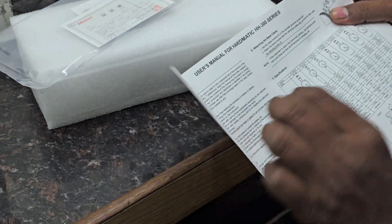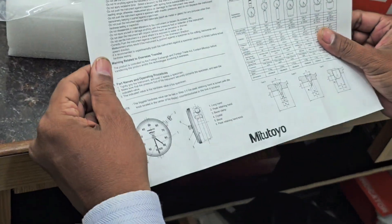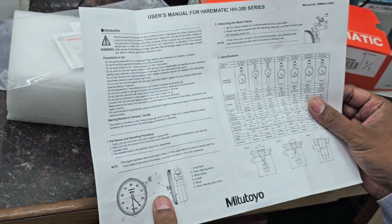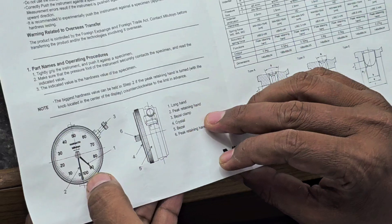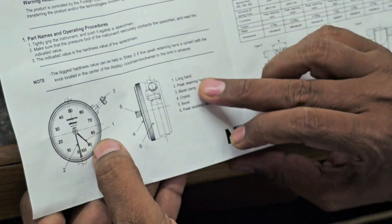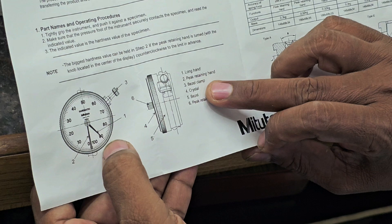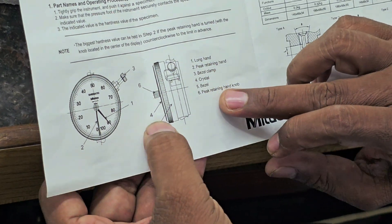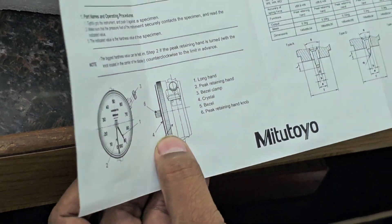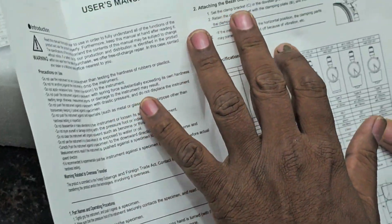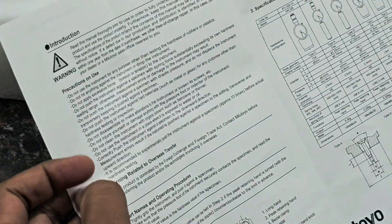Inside is the user manual for automatic 300 series. The parts include: number one is long hand, two is pick retaining hand, three is bezel clamp, four is the crystal, five is the bezel, six is pick retaining hand knob. Also included are instructions for attaching the bezel clamp, specifications, and precautions on use.